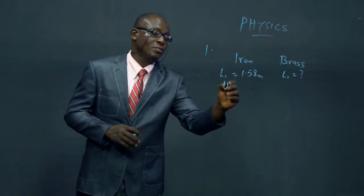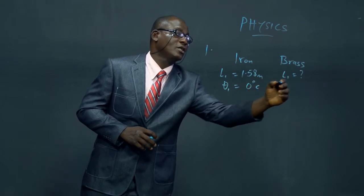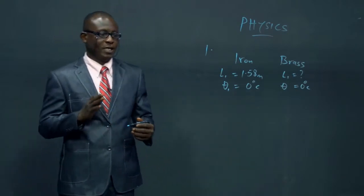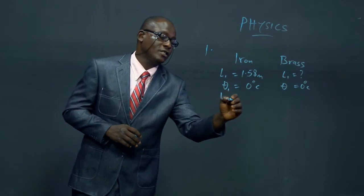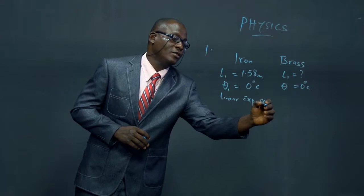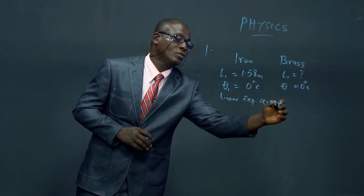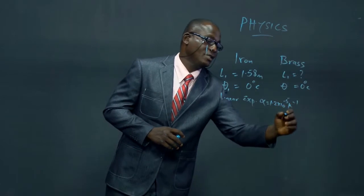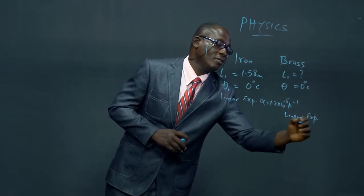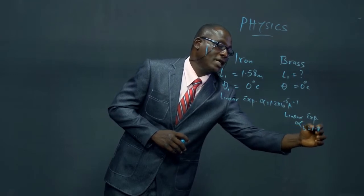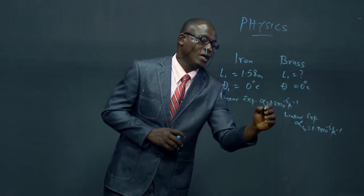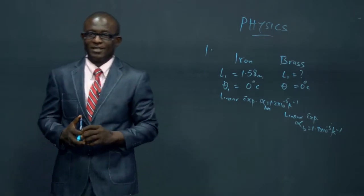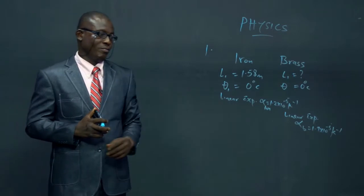The original temperature for both iron and brass is 0 degrees Celsius. We are also given the linear expansivity alpha for iron as 1.2 × 10⁻⁵ per Kelvin, and the linear expansivity for brass as 1.9 × 10⁻⁵ per Kelvin.